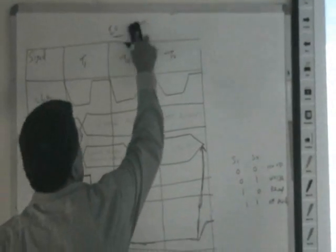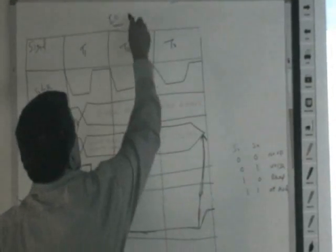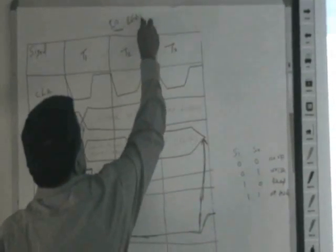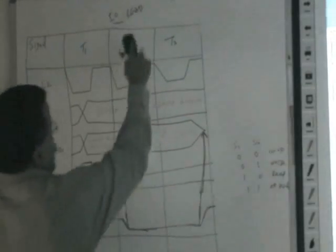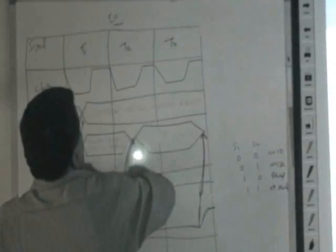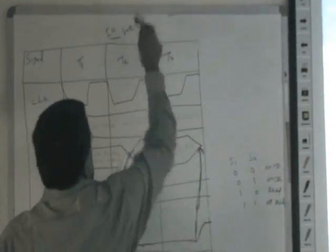For I/O write: this is also an I/O-related operation, so IO bar M bar should be high. Instead of read bar, you use write bar. S1 is 0 and S0 is 1. That's all — every other explanation is the same.